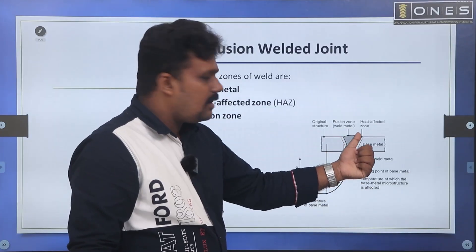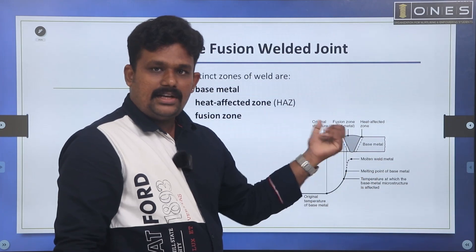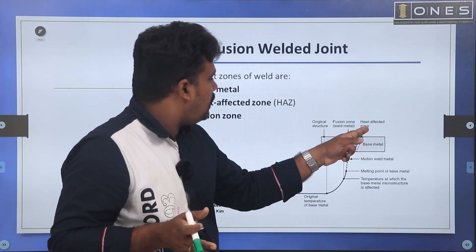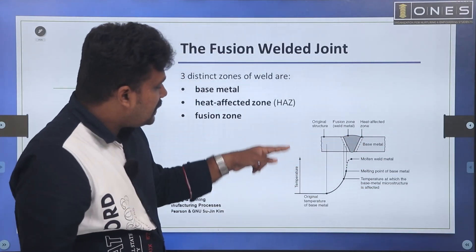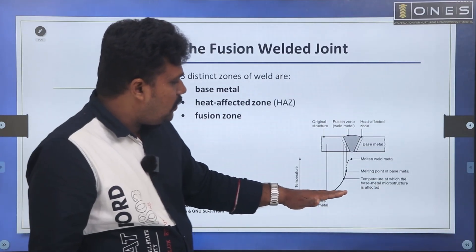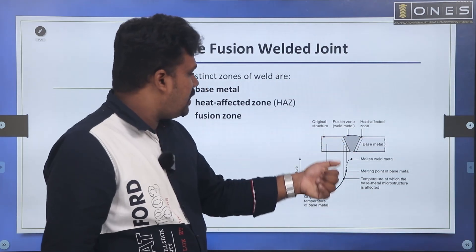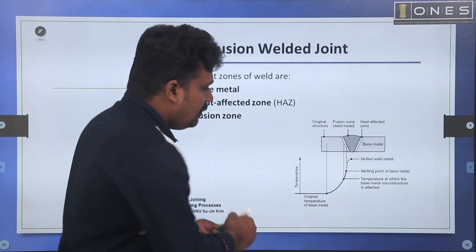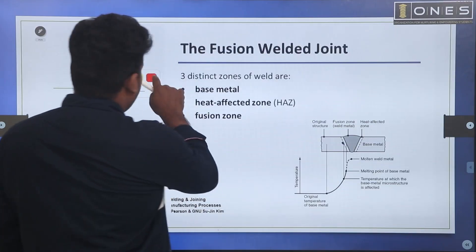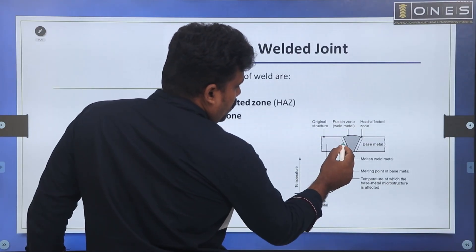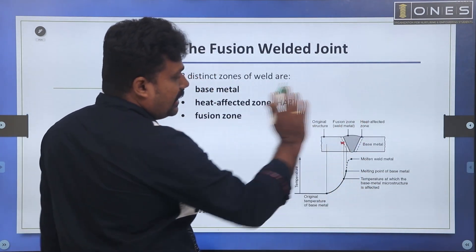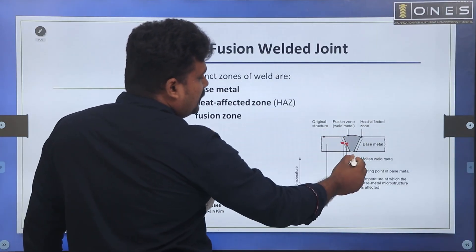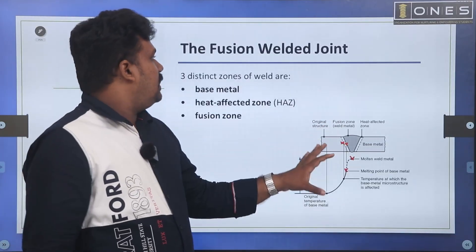The fusion zone is where the original structure melts. The weld zone and fusion zone are distinct. The heat affected zone surrounds the fusion zone. The original temperature of the base metal determines the zones. The melting point defines the boundary between the fusion zone and heat affected zone. The three regions are the fusion zone, heat affected zone, and base metal.